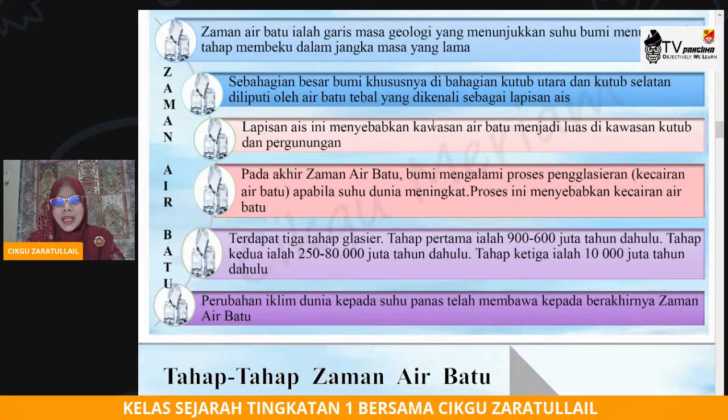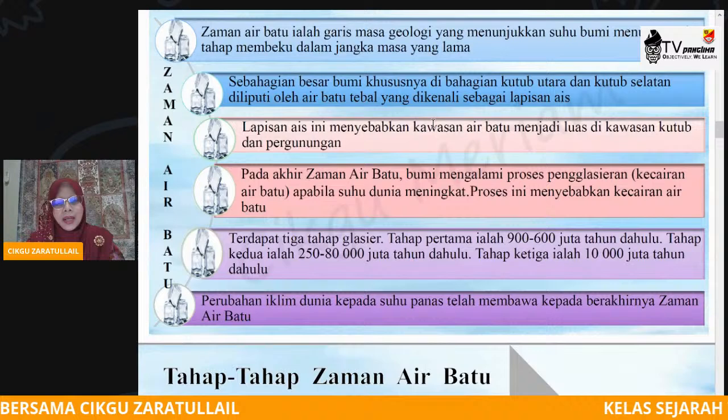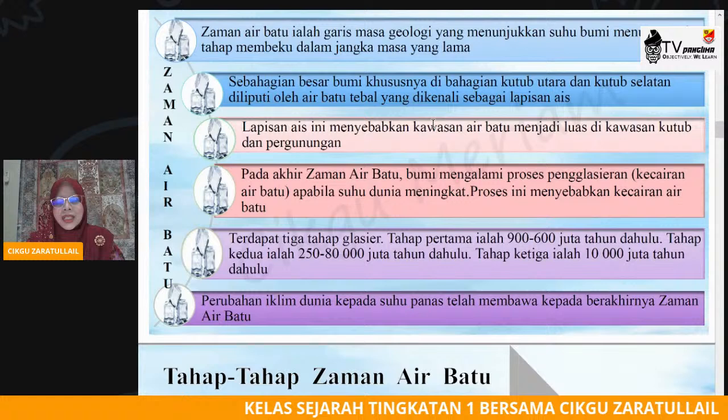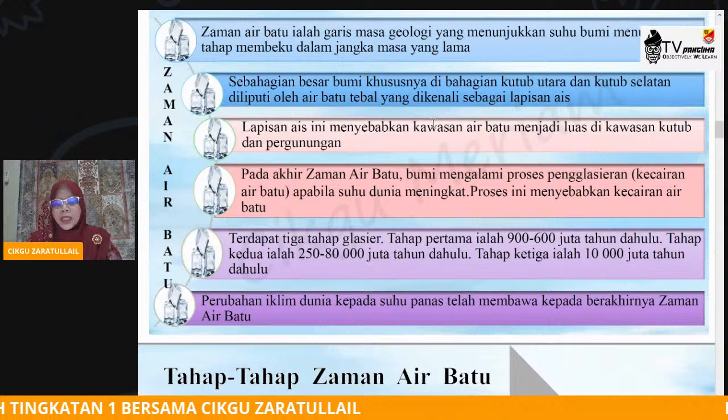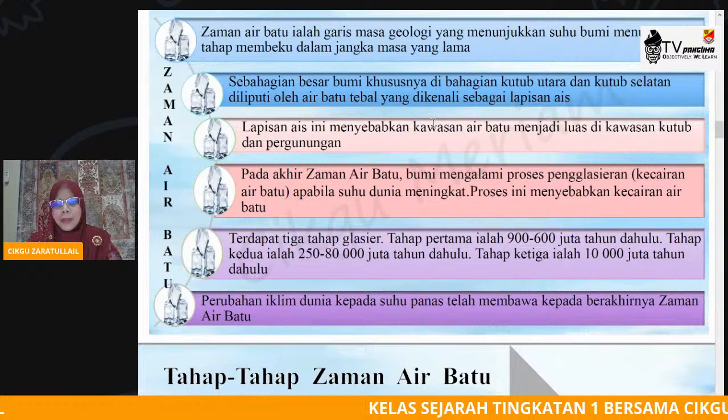Proses ini berlaku apabila suhu bumi semakin meningkat menyebabkan berlakunya kecairan air batu. Apabila suhu bumi semakin panas sedikit demi sedikit, berlaku proses kecairan air batu yang melitupi seluruh permukaan bumi. Untuk pengetahuan, terdapat tiga tahap glasier, terdapat tiga tahap pencairan air batu.